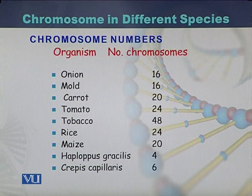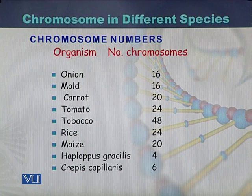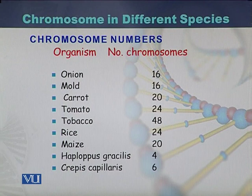Looking at chromosome numbers in different plants: onion has 16 chromosomes, mold also has 16, carrot has 20, tomato has 24, tobacco has 48, rice has 24, and maize has 20, and so on.